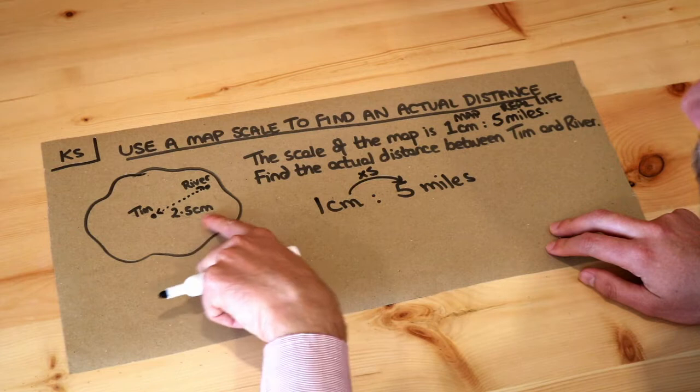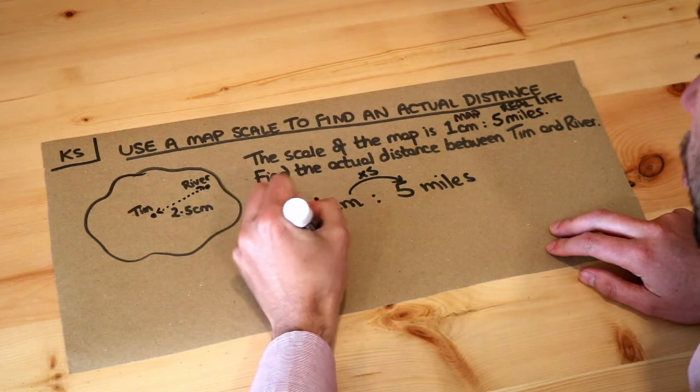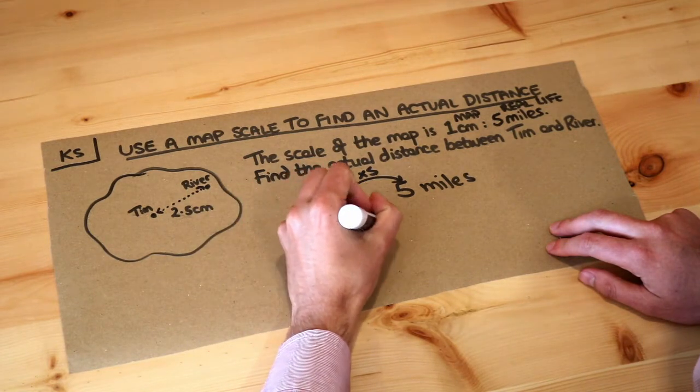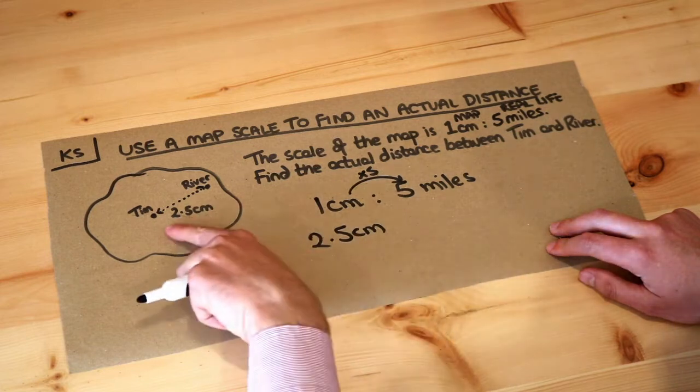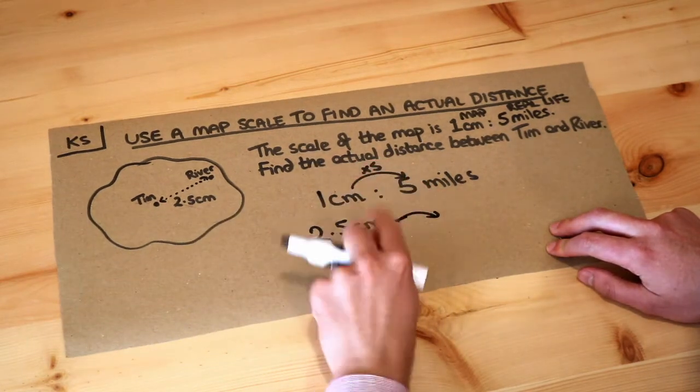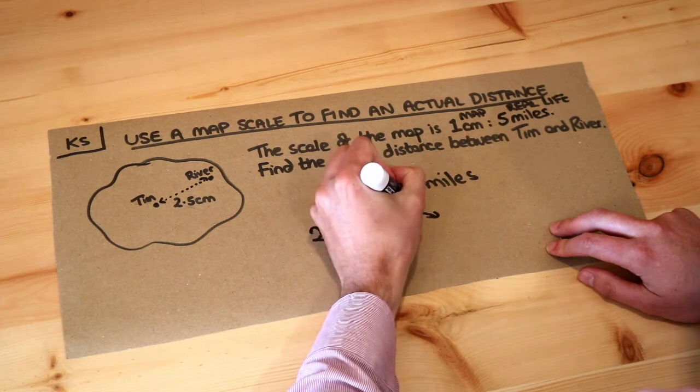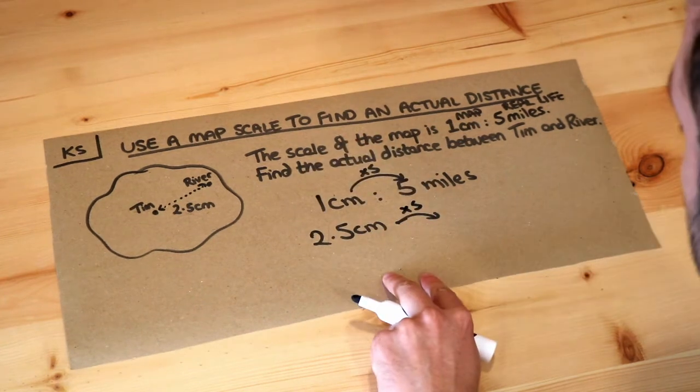So let's do that with this particular distance here we've got 2.5 centimeters. Now to get to real life we just need to times the 2.5 by 5 and also change the centimeters to miles.